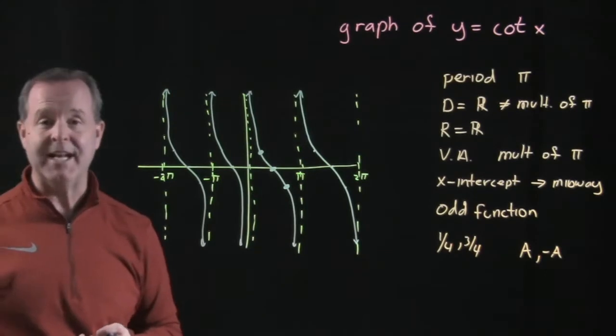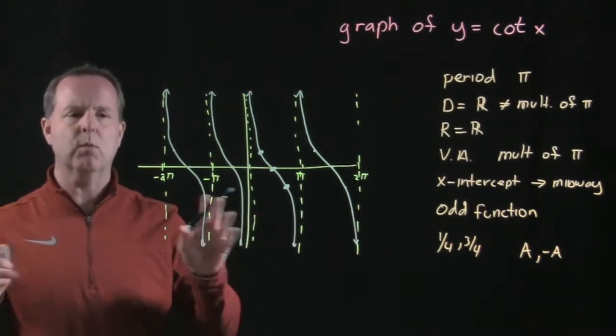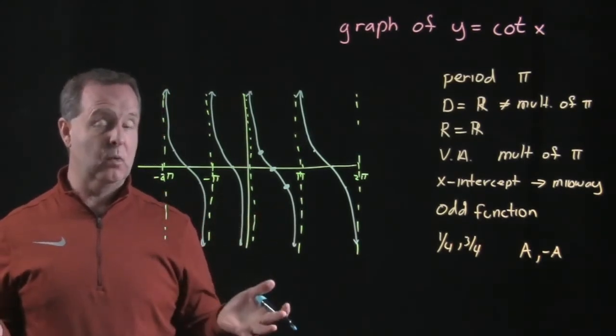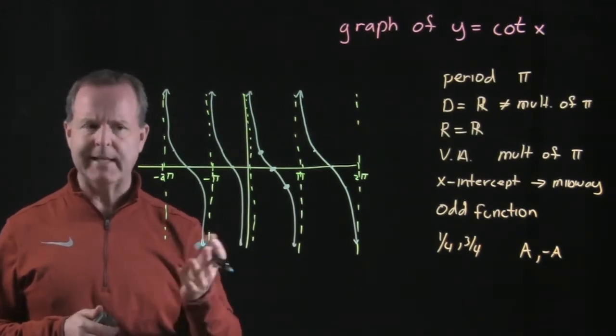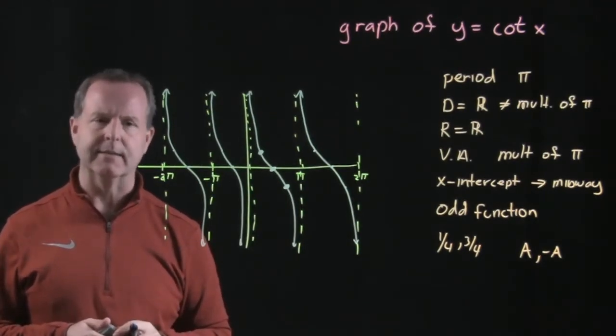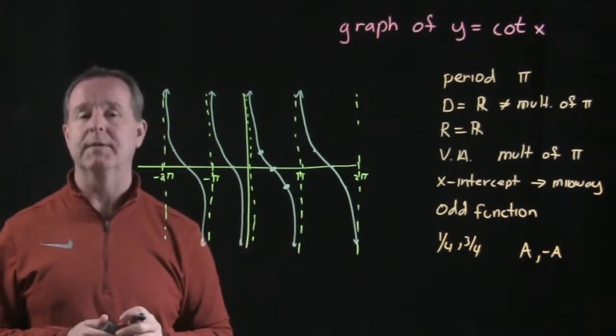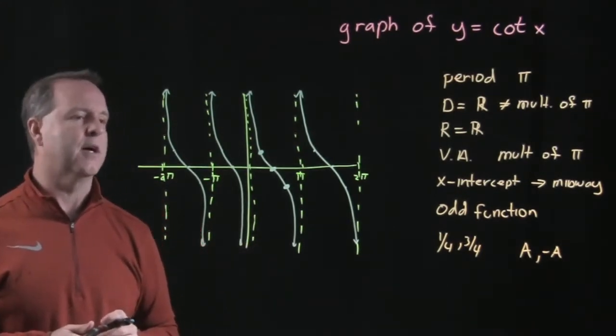Now let's look at the graph of cotangent of x and become comfortable with that. Does it look more like the sine graph, cosine graph, or the tangent graph? It looks a little bit more like the tangent graph, which makes sense because tangent and cotangent are reciprocals of each other.